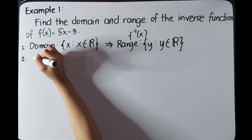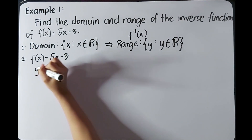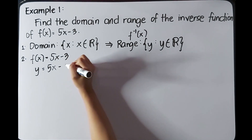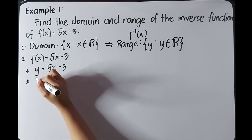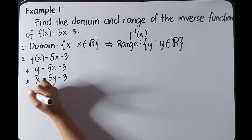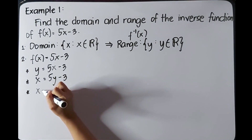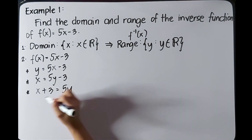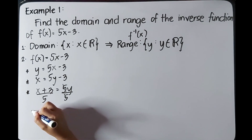For the next step, we get the domain of the inverse function by first finding the inverse. We have f(x) = 5x - 3. First, change f(x) to y, so y = 5x - 3. Second, interchange x and y: x = 5y - 3. Then solve for y by transposing: x + 3 = 5y, and dividing both sides by 5.